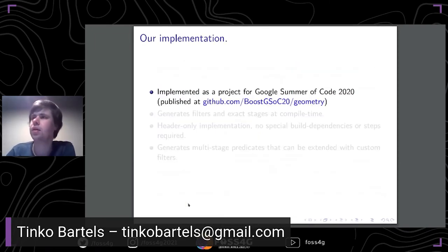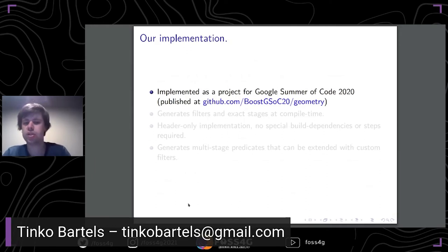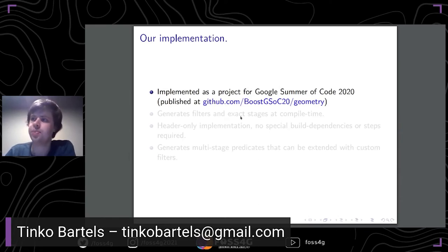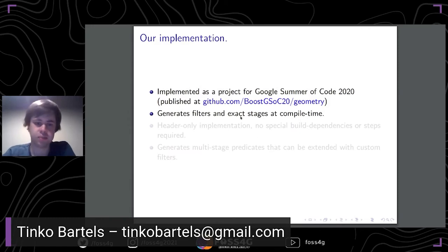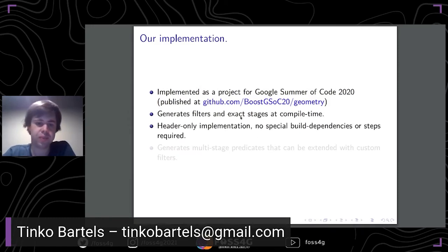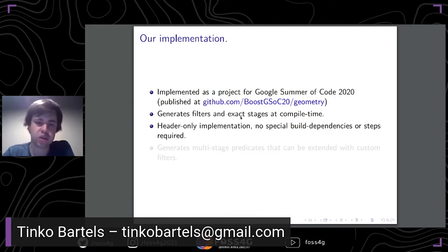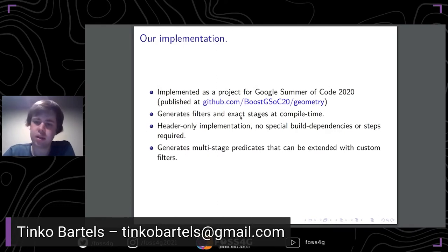Our implementation was done during GSOC 2020 and the code can be found under the provided URL. Our approach is different: we also generate filters and exact stages for arbitrary polynomials, but we do not use code generation — we do it at compile time. So we have a header-only library that can just be included without further build steps and without further dependencies except for Boost.